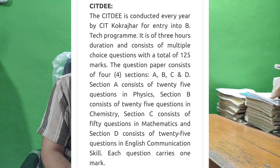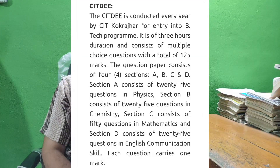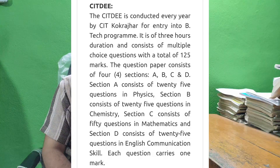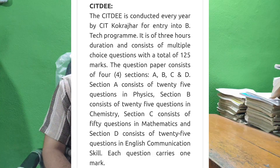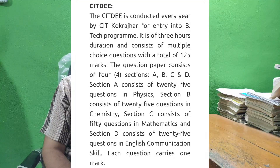The exam consists of three main subjects: physics has around 25 questions, chemistry has 25 questions, and mathematics has 50 questions. So the total from these three subjects is 100 questions.